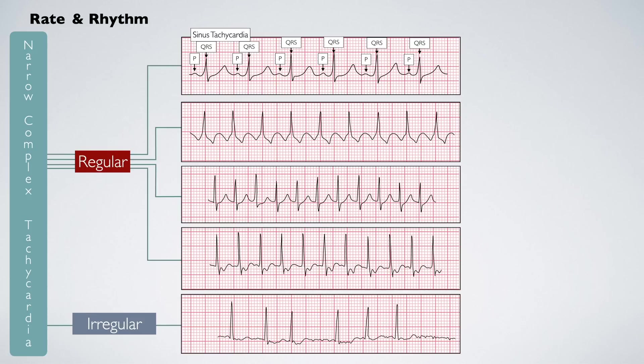If the rhythm is regular and sawtooth-like flutter waves are present, this is atrial flutter. If the rhythm is regular but you cannot identify any P-waves, they are likely buried within the QRS complex. This is a presentation of an atrioventricular nodal re-entrant tachycardia.